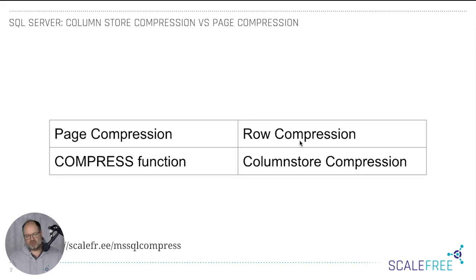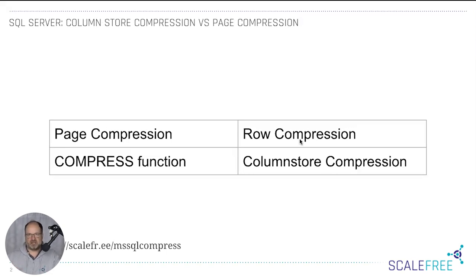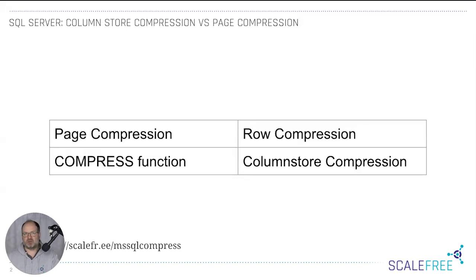Let's start with row compression — it operates at the row level. With multiple columns, what row compression does is optimize the storage consumption of fixed-length attributes especially. That's the basis for page compression.